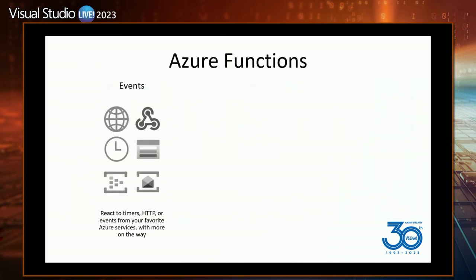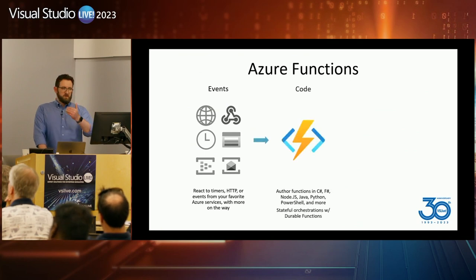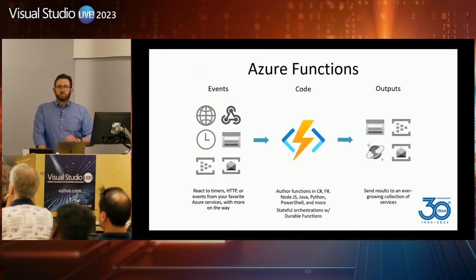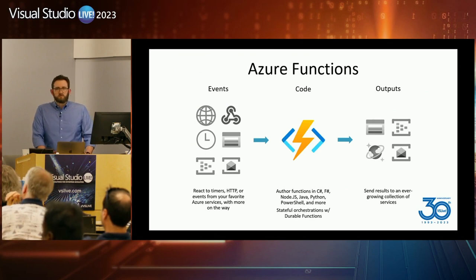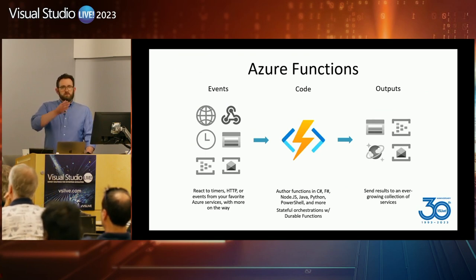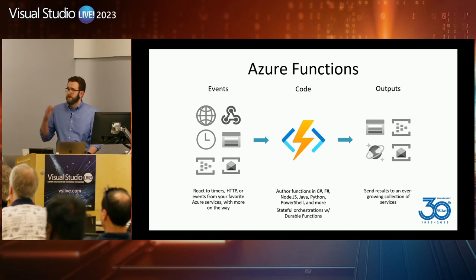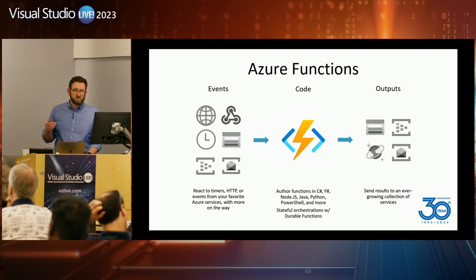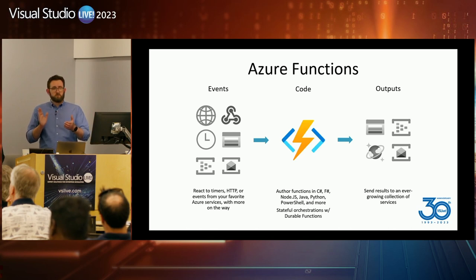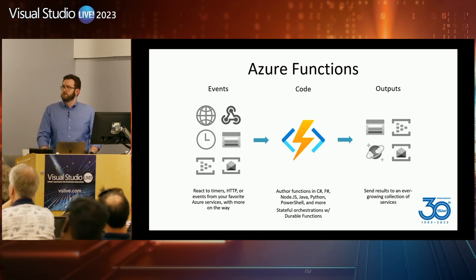When we talk about functions, we have a function, some event that causes it to be invoked, a piece of code that does something with that, and then perhaps some outputs. We have triggers — things that cause your function to run — that could be a message going into a queue, an image being uploaded to a blob store, an HTTP request, or a timer event. Your code is just a standard .NET process, but we also have things to facilitate working with other services.